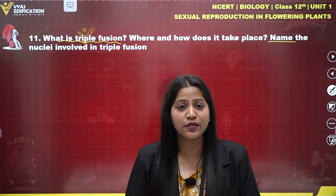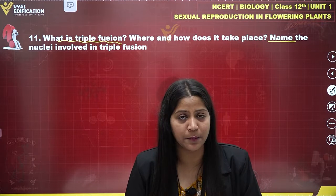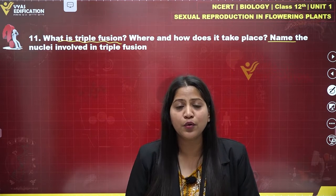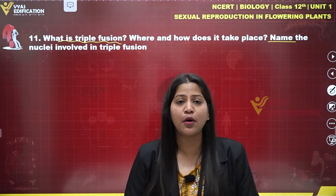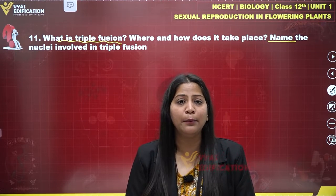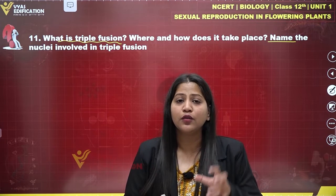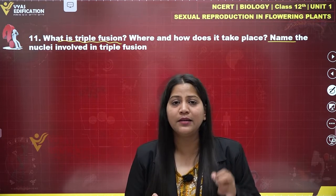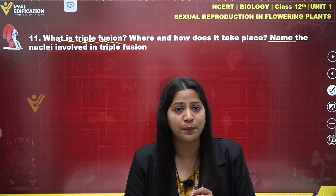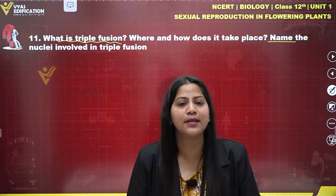The two types of fertilization in double fertilization are syngamy and triple fusion. Syngamy is the fusion of a male gamete from pollen and a female gamete present in the embryo sac of a female gametophyte. This fusion of a male gamete and a female gamete forms a diploid zygote, and this process is termed syngamy.